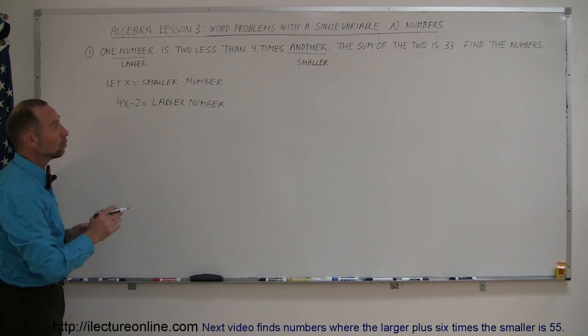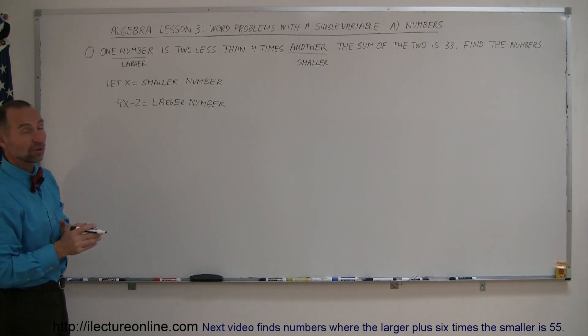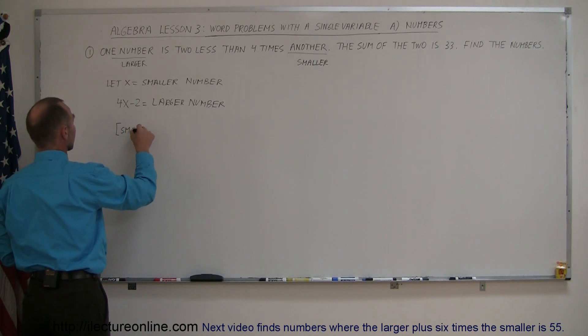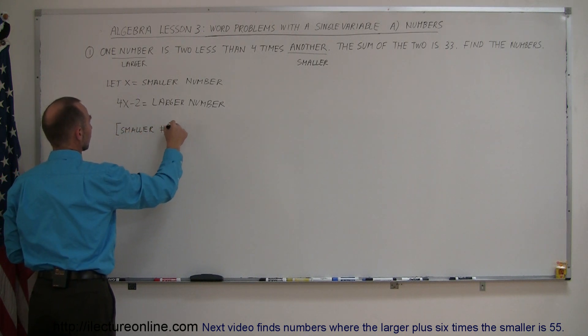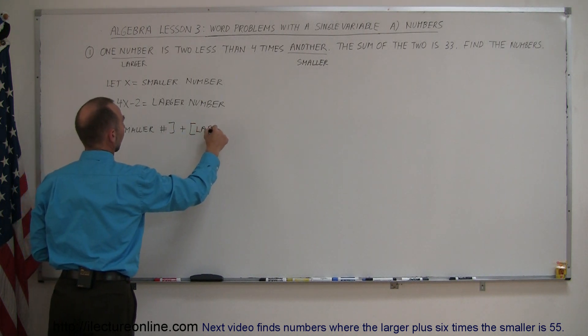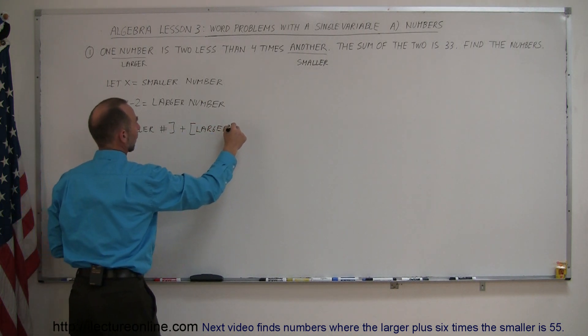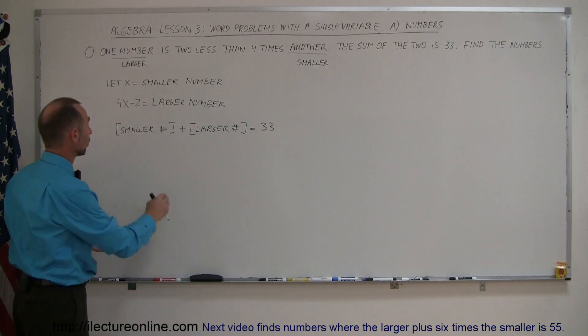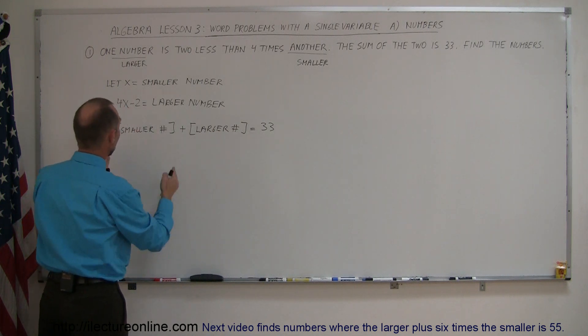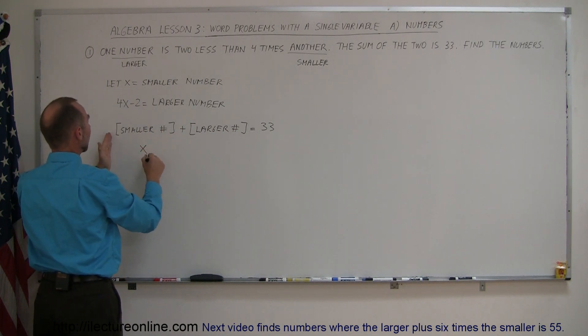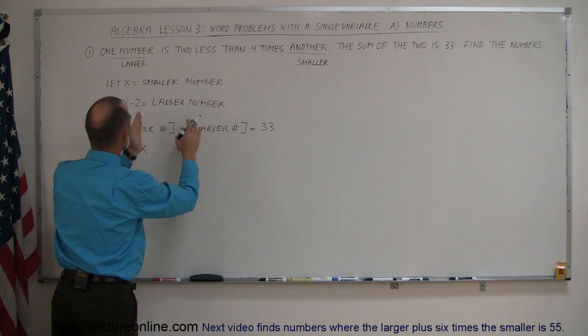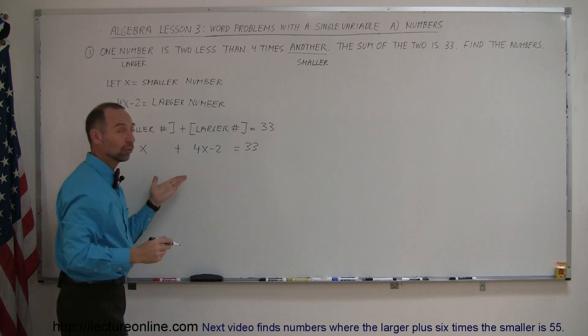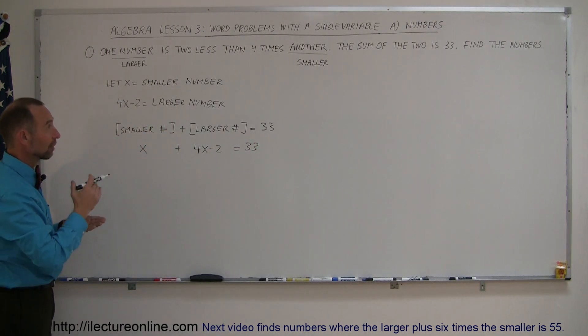Now, we can go ahead and use the other information. It says that the sum of the two is 33, which means that the smaller number plus the larger number equals 33. The smaller number was represented by x, so we write x. And then the larger number was represented by 4x minus two. And that should add up to 33, and then all we have to do here is solve for x, and we figure out what the two numbers are.